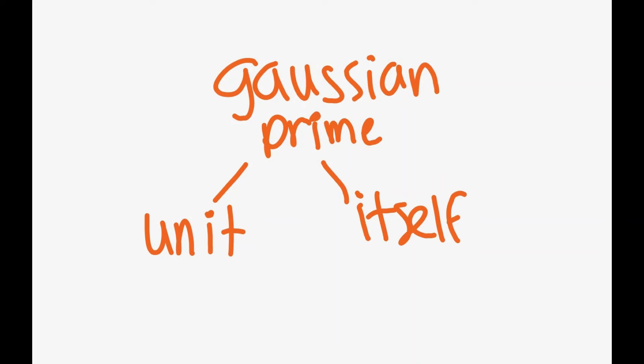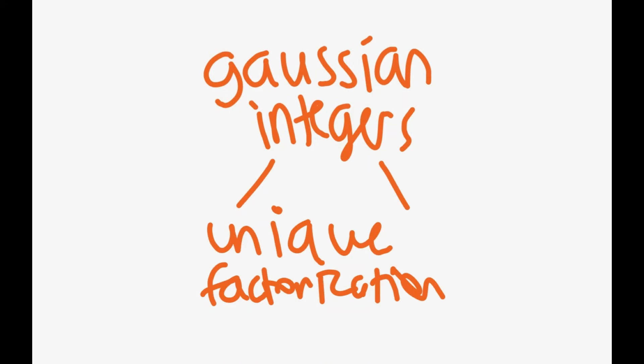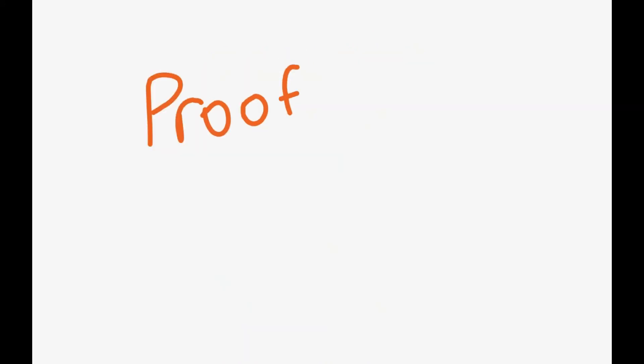It turns out that just like with integers, Gaussian integers have a unique prime factorization. However, the proof for that will probably be for another video.